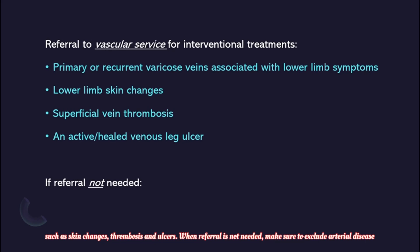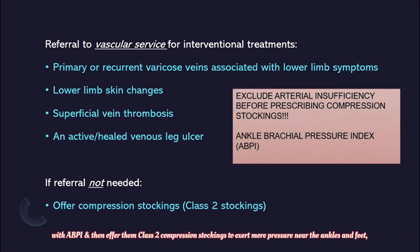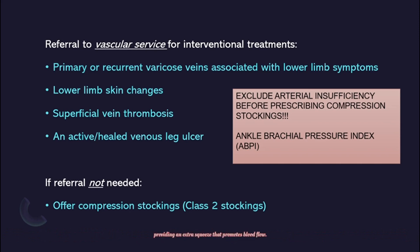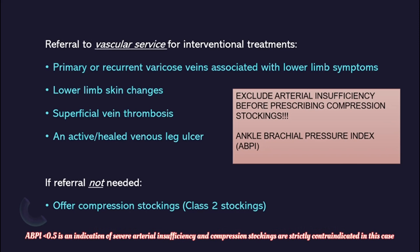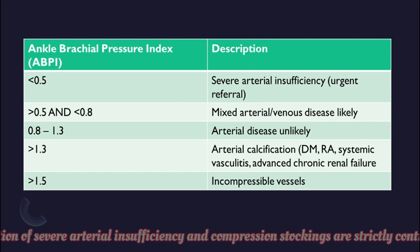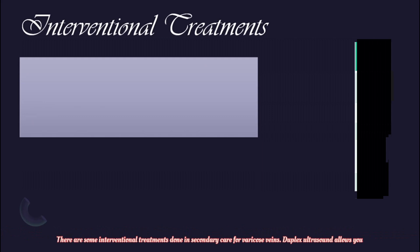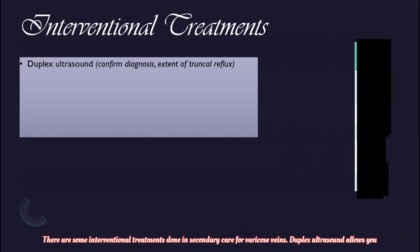When referral is not needed, make sure to exclude arterial disease with ankle brachial pressure index (ABPI), then offer compression stockings — specifically class 2 stockings, as recommended by NICE guidelines — which exert more pressure near the ankles and feet, providing an extra squeeze to promote blood flow. An ABPI less than 0.5 is an indication of severe arterial insufficiency, and compression stockings are strictly contraindicated in this case; the patient needs to be referred urgently for specialist vascular assessment.